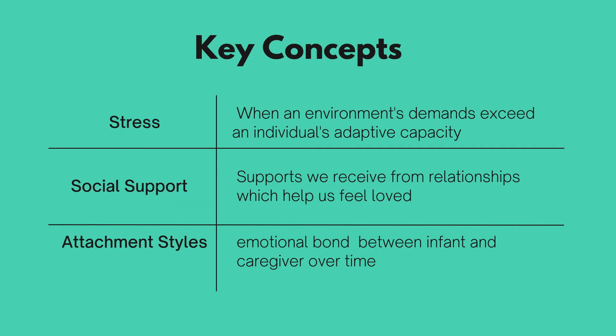In the field of health psychology, stress is defined as a process in which environmental demands tax or exceed the adaptive capacity of an organism, resulting in psychological and biological changes that may place persons at risk for disease. Social support refers to the informational, tangible, affectionate, emotional, and instrumental supports we receive from relationships, which help us feel that we are cared for, loved, and valued. The current study focuses only on instrumental support — the perceived availability of people who can provide practical aid in daily tasks — and emotional support, which is the availability of people to listen to one's problems with empathy, caring, and understanding.